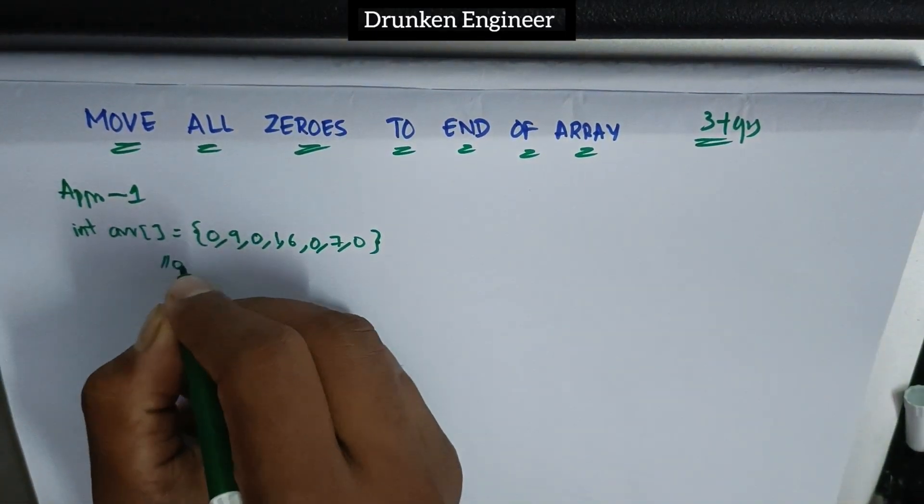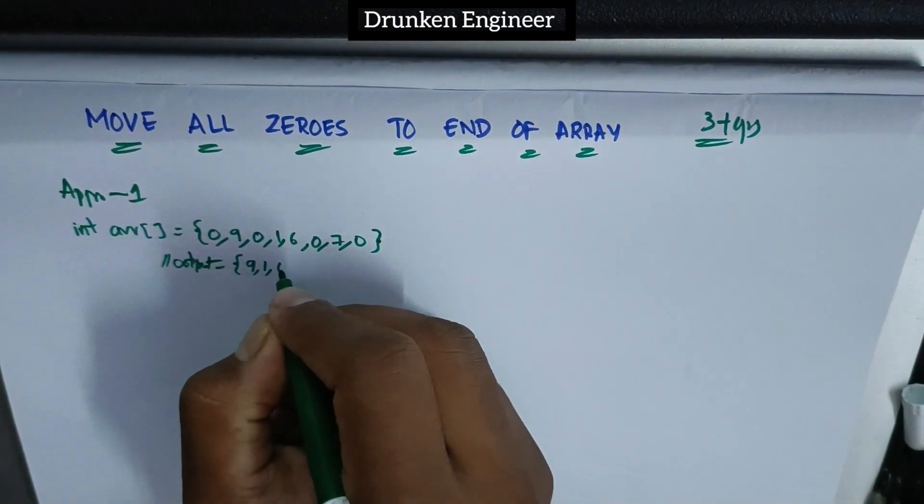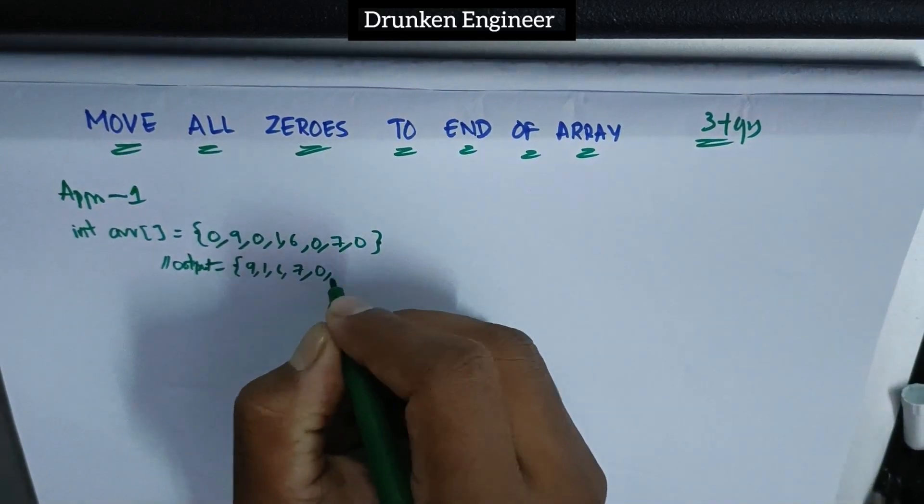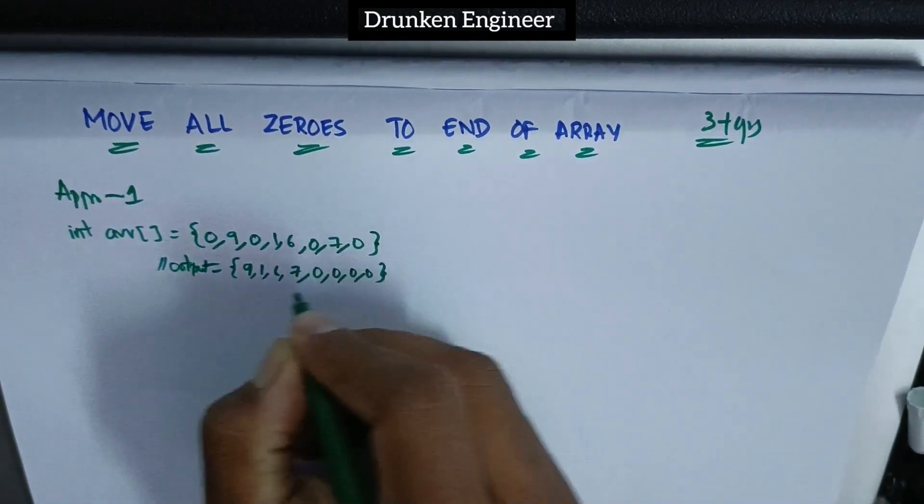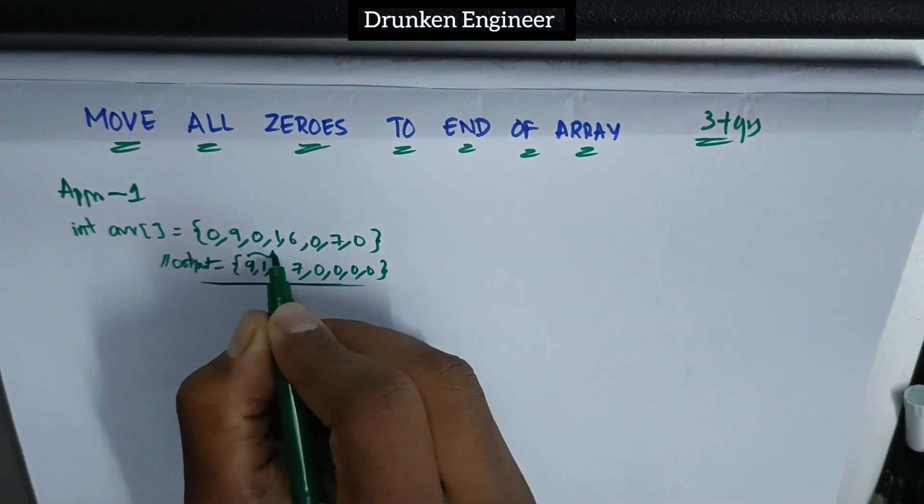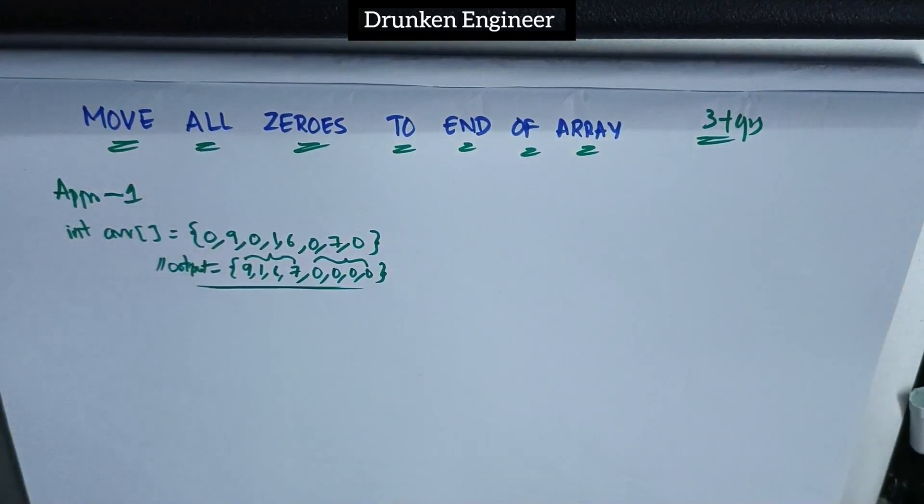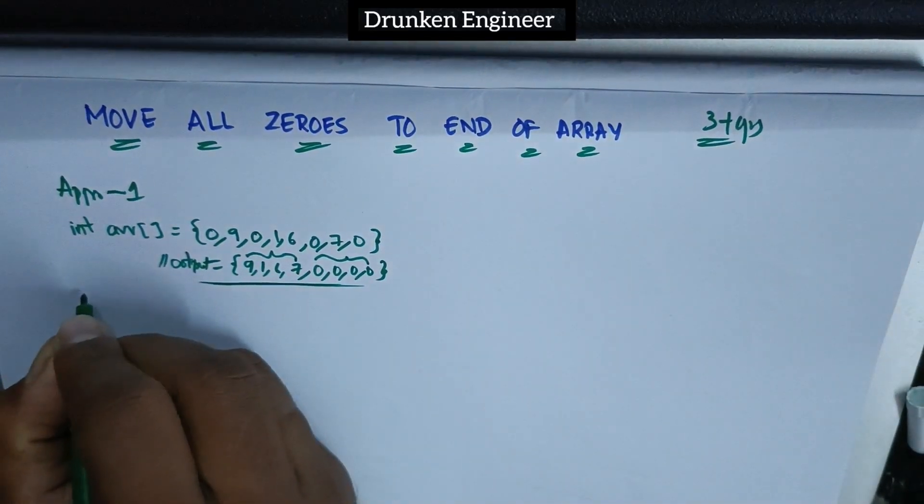The expected output would be nine, one, six, seven, and then four zeros. You have to move all the non-zeros to the front and all the zeros to the back of the array.